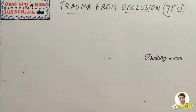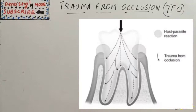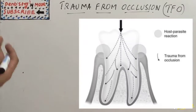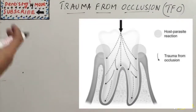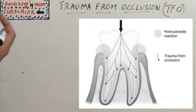Welcome back to another session in dentistry. Today's topic is trauma from occlusion in periodontology. Occlusal force is a critical factor which affects the condition and structure of the periodontium. The periodontal ligament and alveolar bone require mechanical stimulation from occlusal forces to remain structurally sound. When this function is insufficient, these tissues undergo atrophy, and when occlusal forces exceed the physiologic adaptive capacity of the tissues, they cause damage.